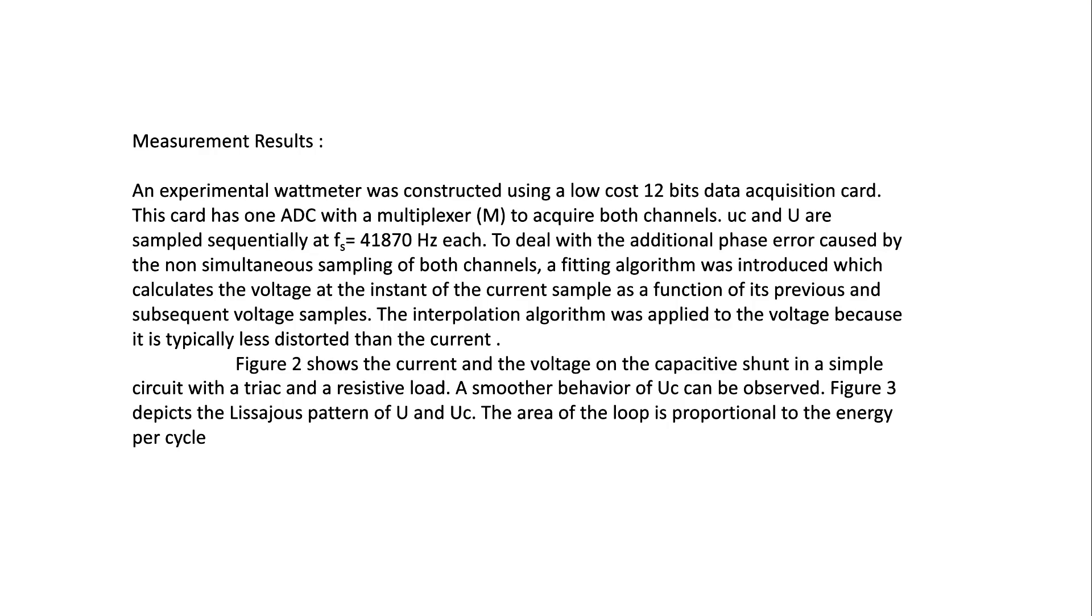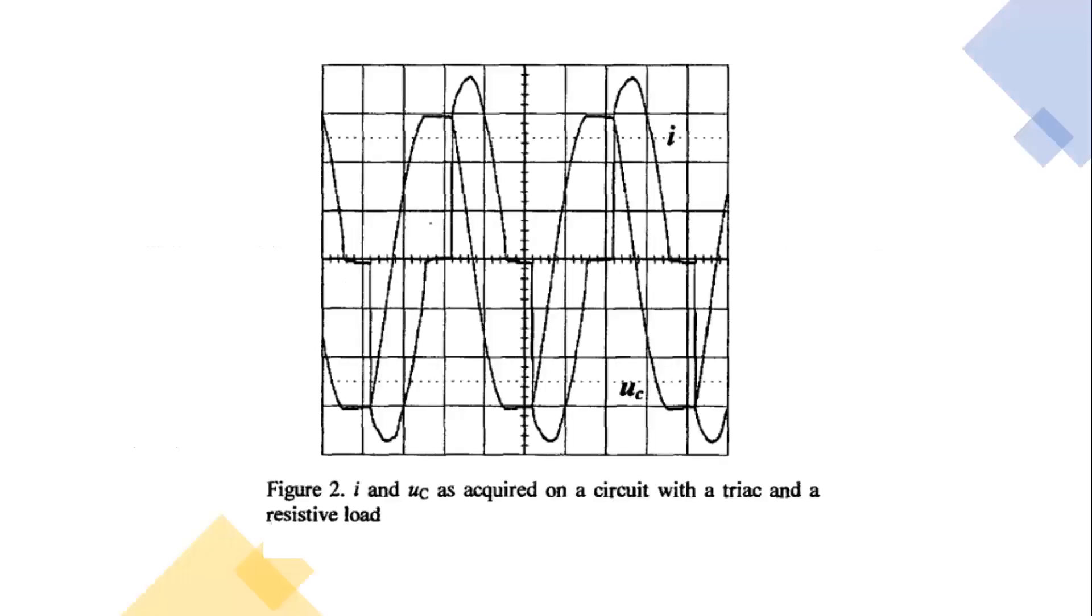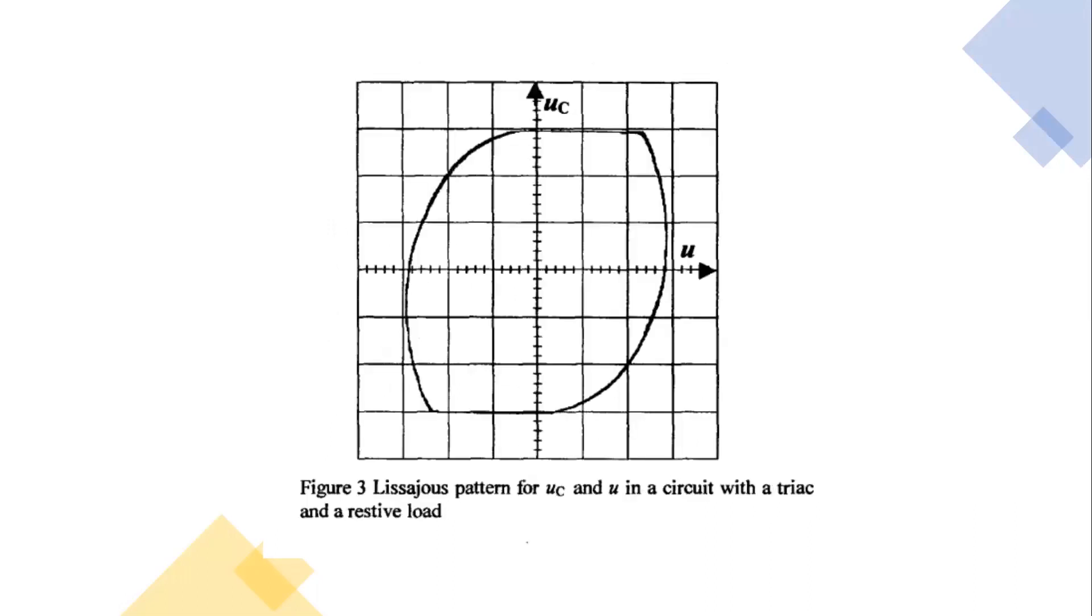Figure 2 shows the current and the voltage on the capacitor shunt in a simple circuit with a triac and resistive load. A smoother behavior of Uc can be observed. Figure 3 depicts the Lissajous pattern of u and Uc. The area of the loop is proportional to the energy per cycle. Figure 2 shows i and Uc acquired on a circuit with a triac and a resistive load. Figure 3 shows the Lissajous pattern for Uc and u in a circuit with a triac and a resistive load.